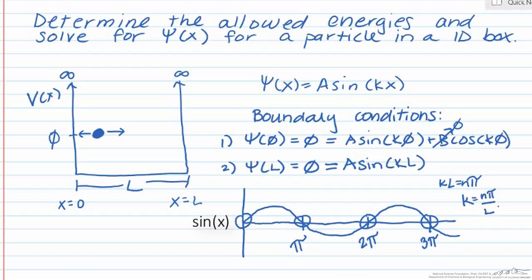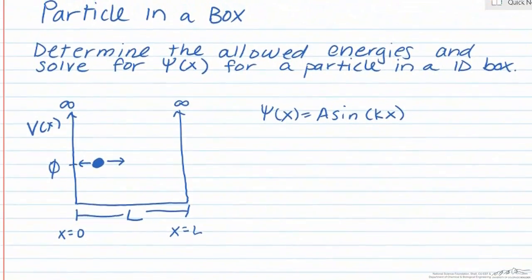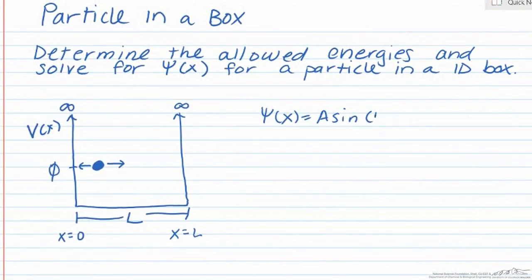We've now used our boundary conditions in order to solve for two of our constants. And what we've found is that psi of x is equal to a sine n pi x over L. At this point, we can actually solve for our allowed energy levels for our particle.